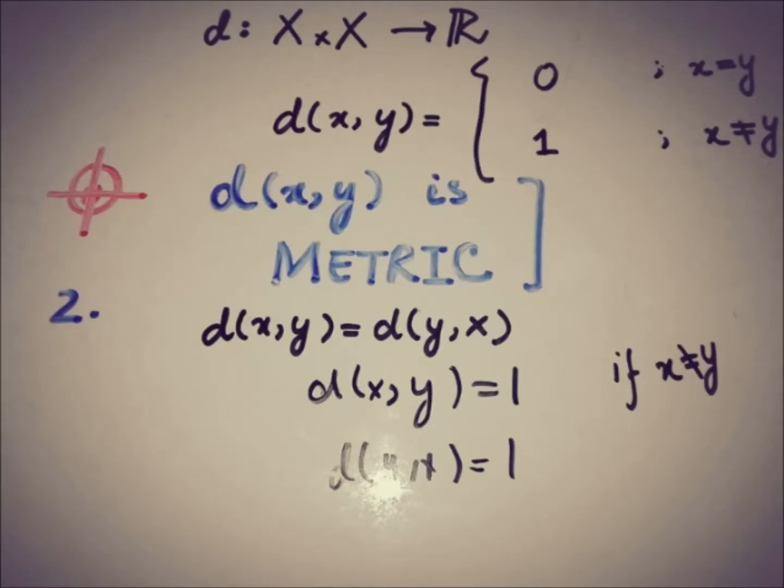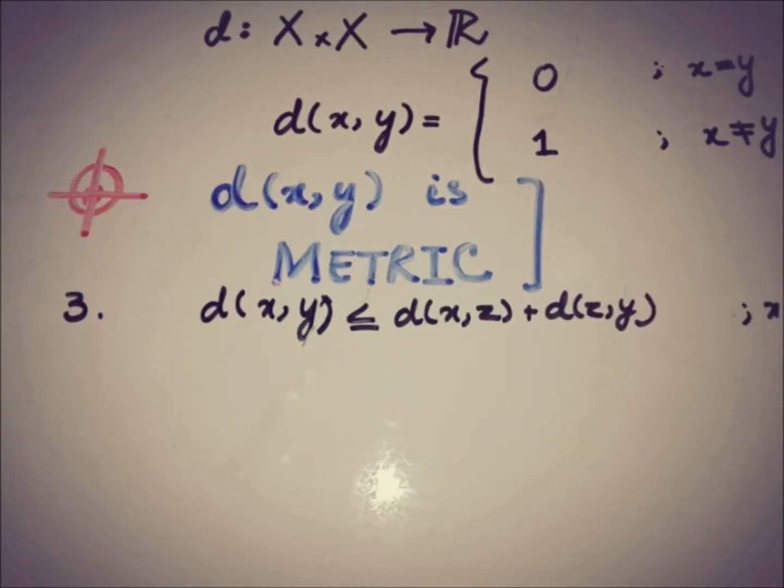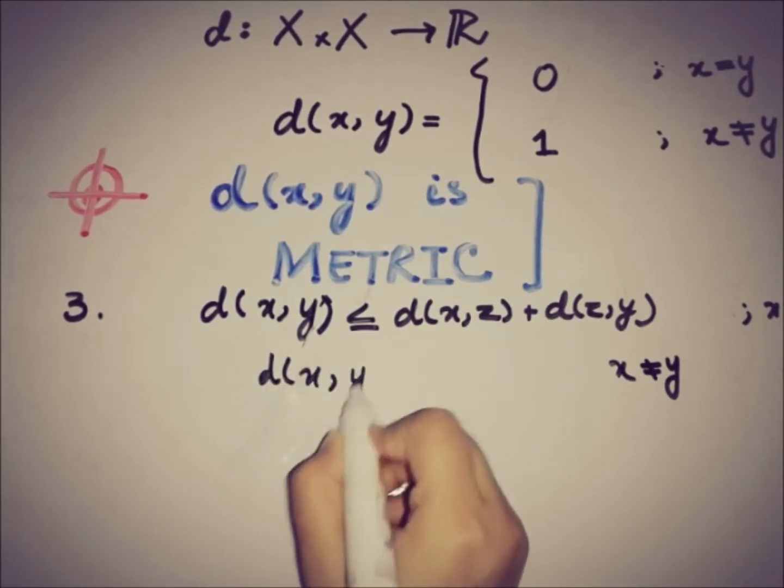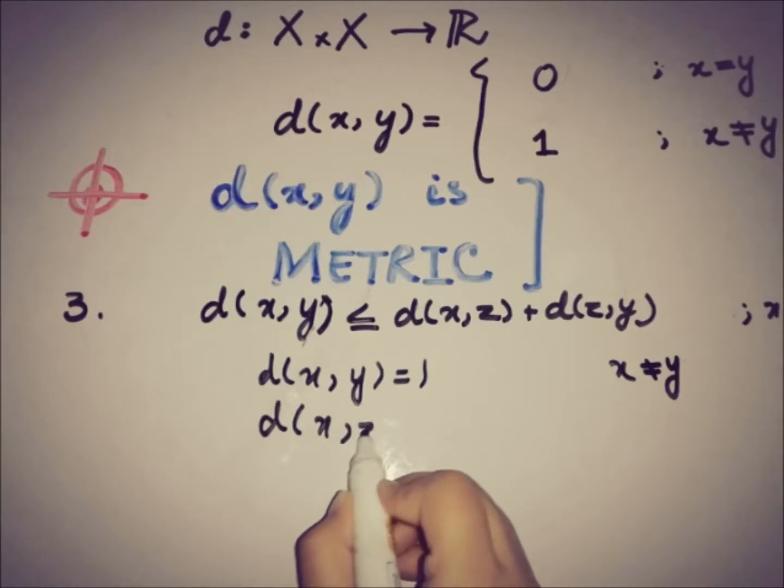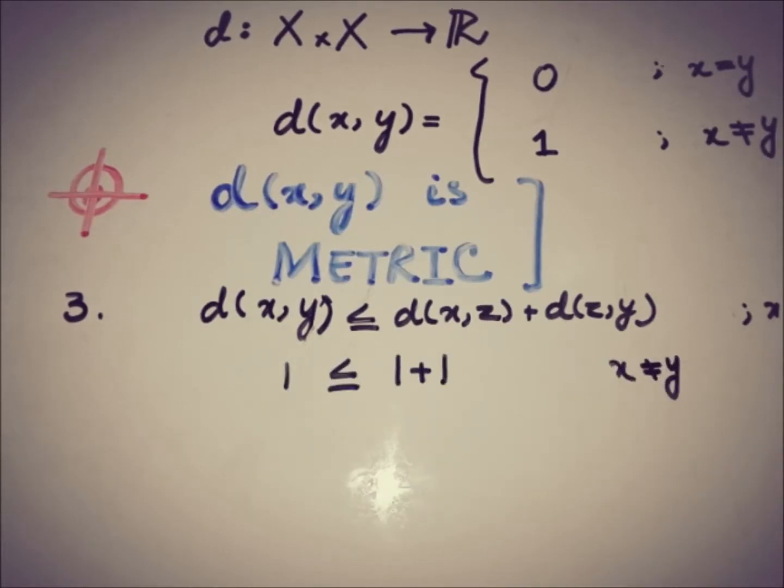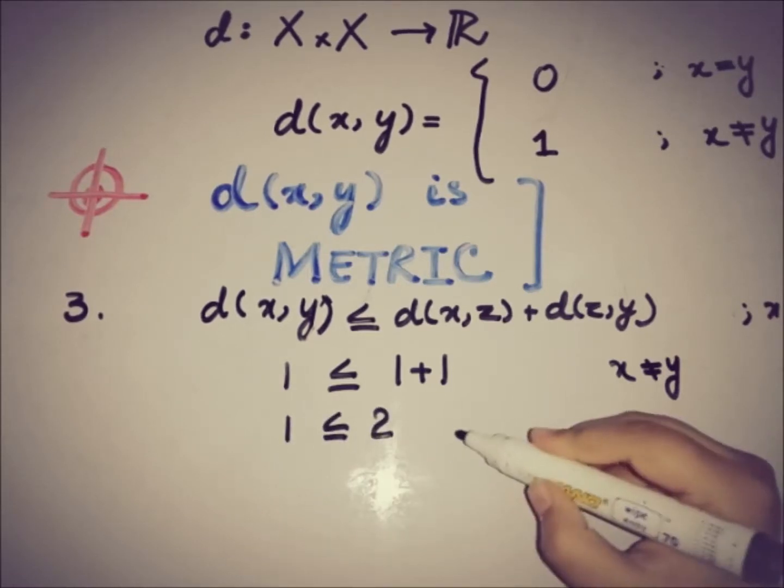Now moving toward the third property, the triangular inequality. That is, d(x,y) must be less than or equal to d(x,z) plus d(z,y). By using the definition of the function, if x is not equal to y, then d(x,y) equals 1, d(x,z) equals 1, and d(z,y) equals 1. Putting these values in this inequality, we get 1 is less than 1 plus 1, and 1 is less than or equal to 2. So this is an obvious result.